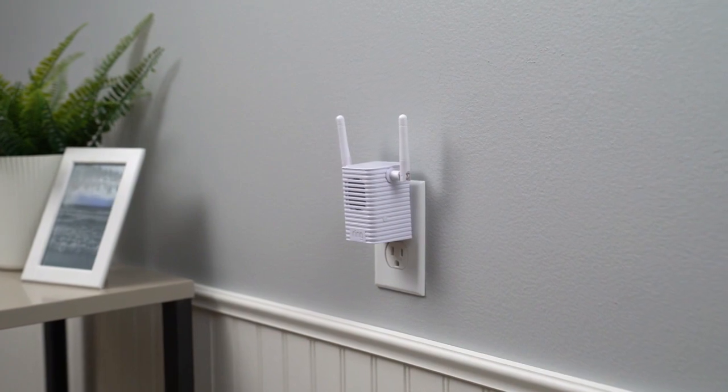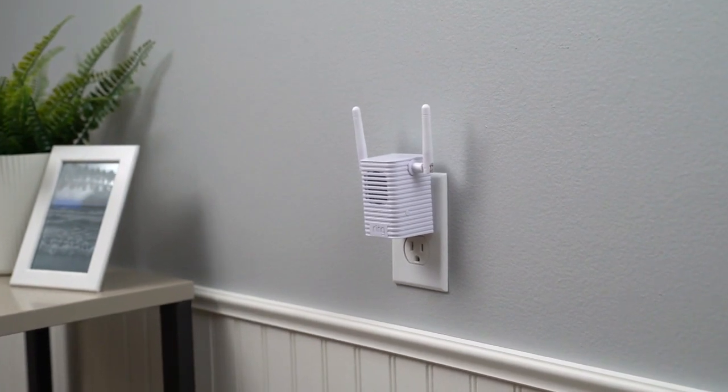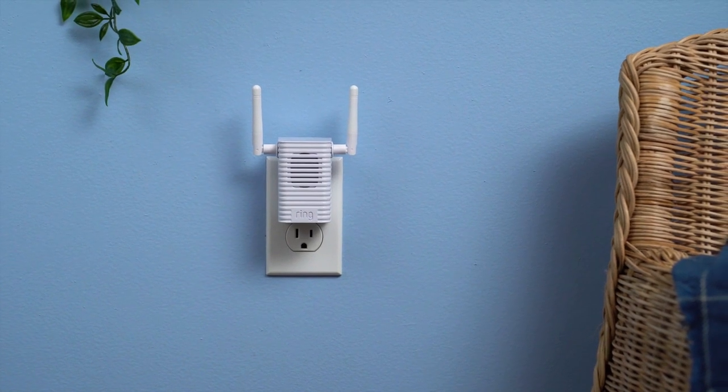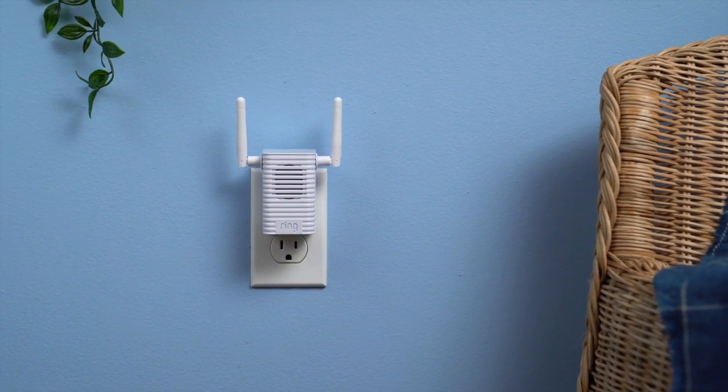First, it acts as an amplifier for alert sounds. So when someone presses the button on your Ring doorbell or trips a motion sensor, you can hear the alert throughout your home.